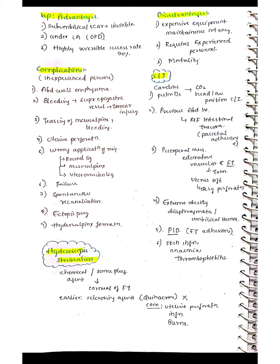Complications are more common in inexperienced hands. They include abdominal wall emphysema from gas injection, bleeding from injury to the superior epigastric vessel by the trocar cannula, tearing of the mesosalpinx, uterine perforation, and wrong application of rings to the round ligament, mesosalpinx, or utero-ovarian ligament. Additional complications include failure rate, spontaneous re-canalization, ectopic pregnancy, and hydrosalpinx formation.